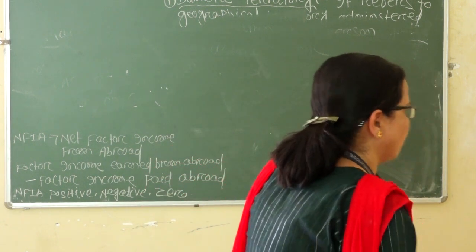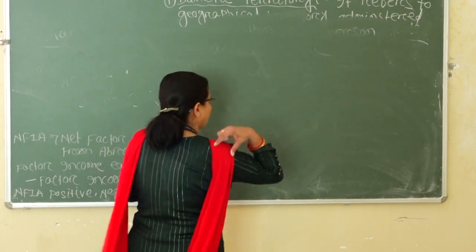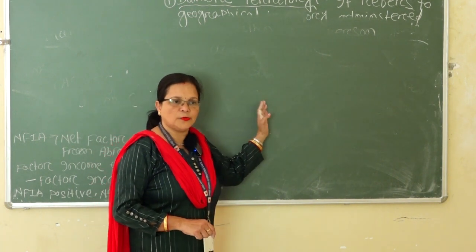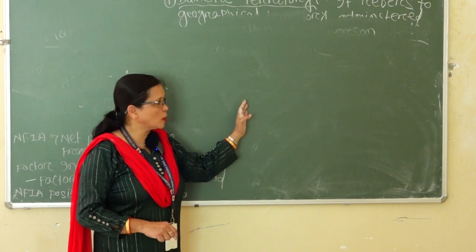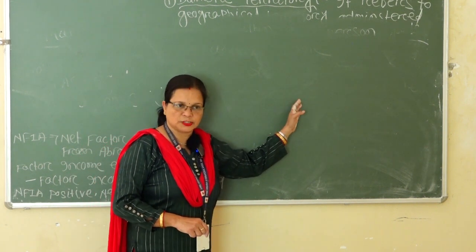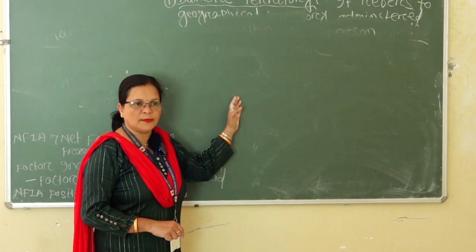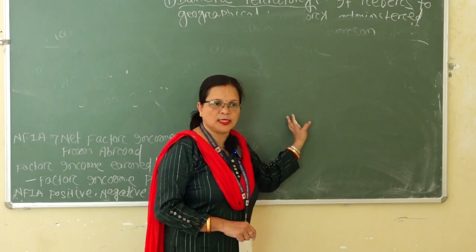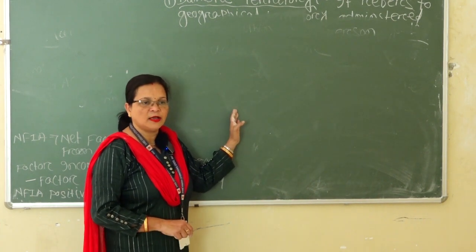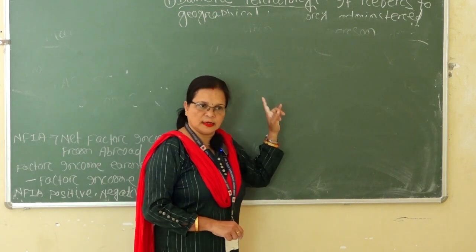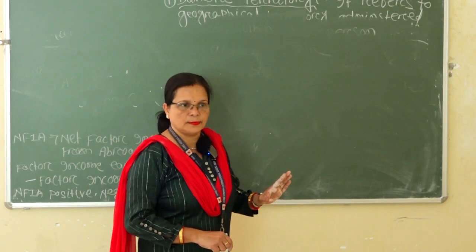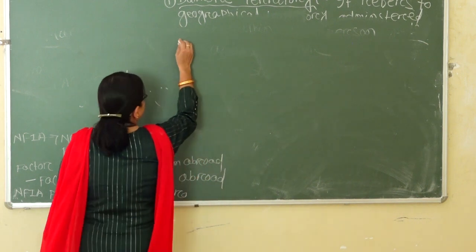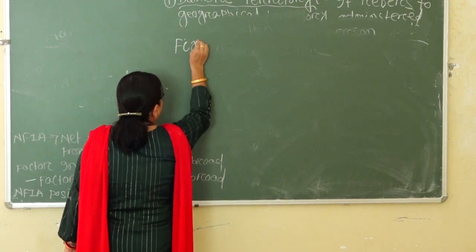If a question asks for the difference between factor income and transfer income: first, factor income includes rent, wages, interest, and profit, whereas transfer income includes gifts, scholarships, and donations. Second, factor income is included in national income and transfer income is not. Third, factor income is earned income and transfer income is unearned income.